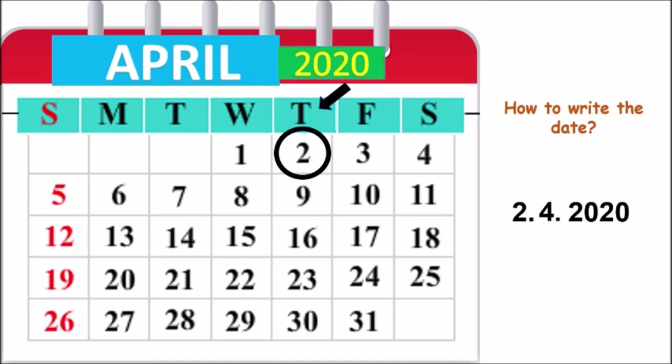Do this activity daily and mark the dates just like you can see on the screen. Number 2 is marked, so you have to mark the dates every day on the calendar. Enjoy this activity. Bye-bye.